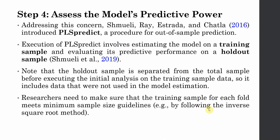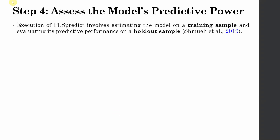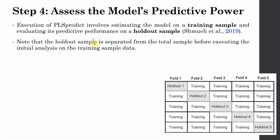For minimum sample size guidelines, you can refer to the inverse square root method, and that link will be shared in the description. Execution of PLS Predict involves estimating the model on the training sample and evaluating its predictive performance on the hold-out sample. Your estimation done on the training sample is then used to predict your hold-out sample. The hold-out sample is separated from the total sample before executing the initial analysis.